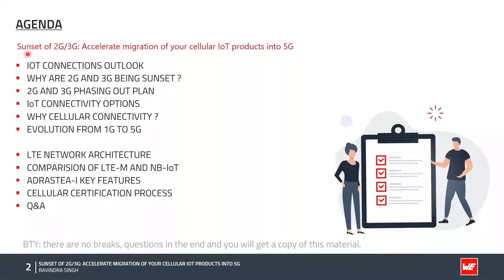So first, let's have a look at the agenda. Today we will discuss the IoT connections outlook, then why 2G and 3G are being sunset, and the 2G and 3G phasing out plan worldwide. We will cover IoT connectivity options and the advantages of cellular connectivity. Then we'll see the evolution from 1G to 5G, LTE network architecture, comparisons of LTM and NB-IoT, key features of Adrastea-I, and the cellular certification process. And later we will have a question and answer session.